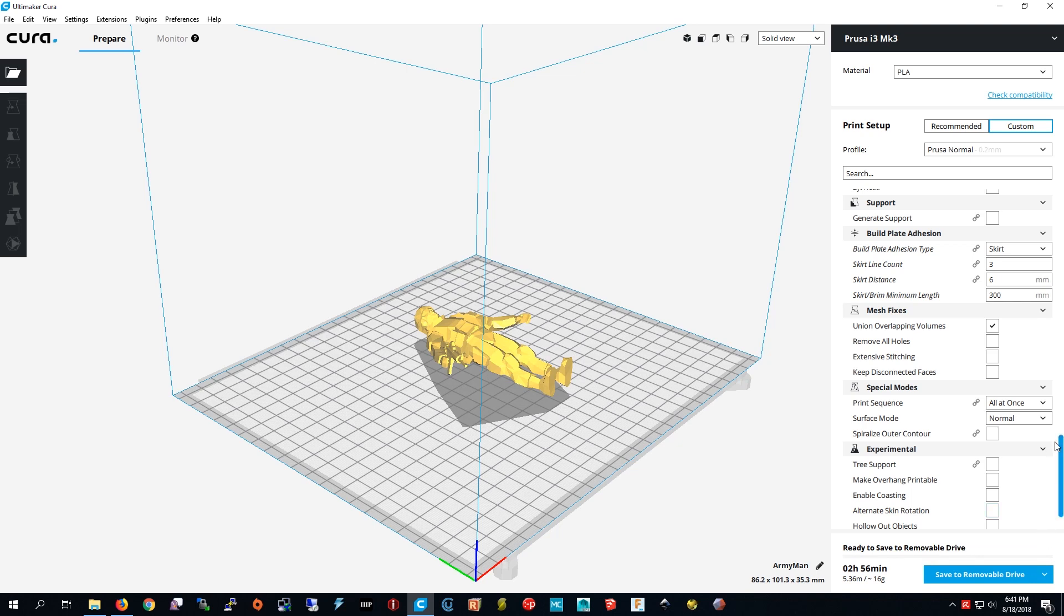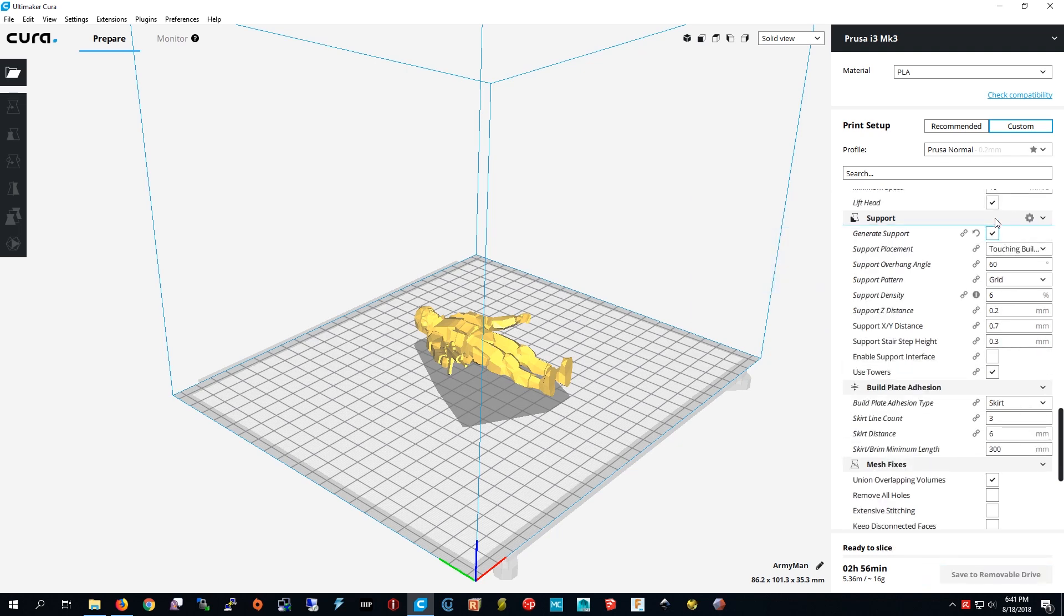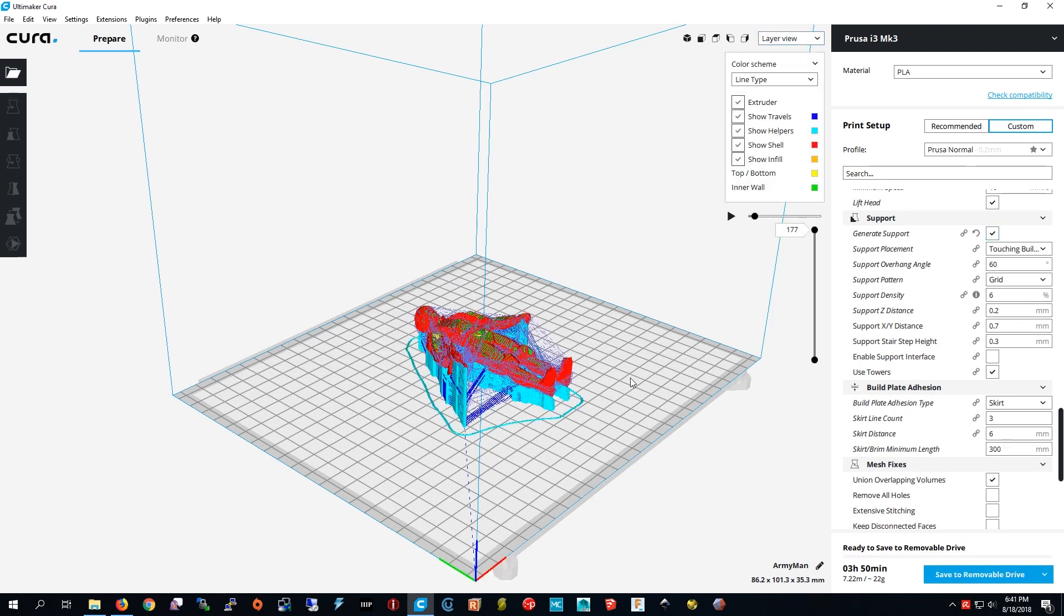It's done, but it's in mid-air, so I'm going to press generate support. I'm going to go into layer view, and you can see that giant blue support right there.